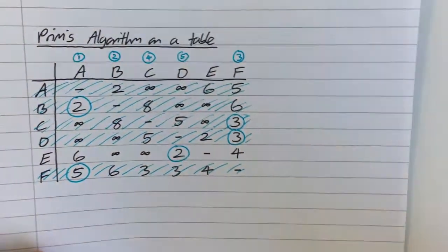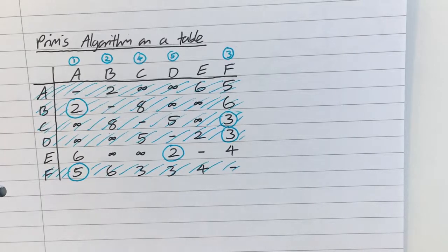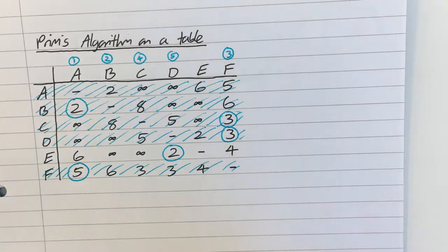You could then put a 6 and cross off that row, but you don't need to, because we've now finished. N nodes, N minus 1 arcs, is what a tree has. Here we have 6 nodes, so we need 5 arcs, and you'll see that 5 numbers are circled. Those are the arcs that I've chosen.